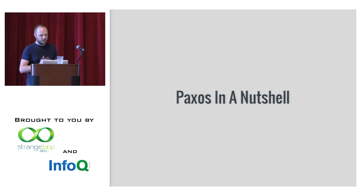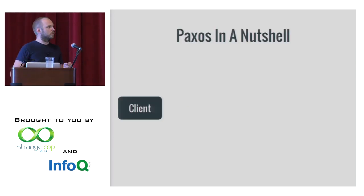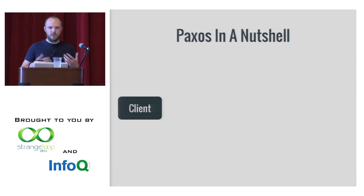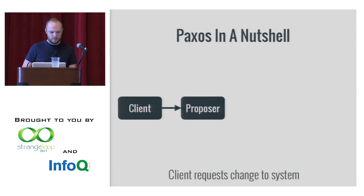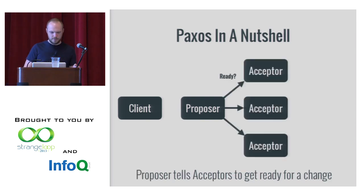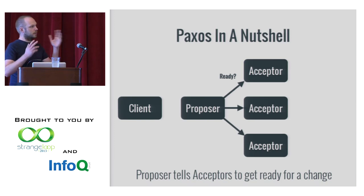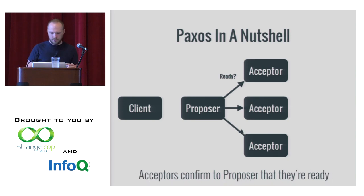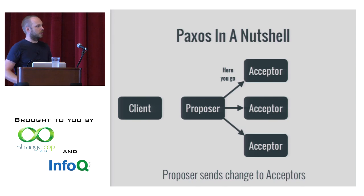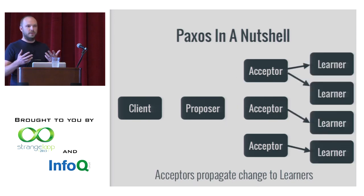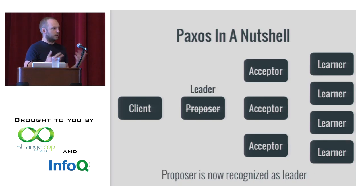I'll give you the brief rundown of Paxos. There are five different roles: you have a client requesting a change to the system, that goes to the proposer who advocates for the client. The proposer talks to a group of acceptors, and if you can get a quorum — a majority of them — they confirm and the proposer sends the change over. Once it's accepted, it's a learned value, the new value of the system, and it goes to all the learners. Now the proposer becomes the leader. That's Paxos in a nutshell.